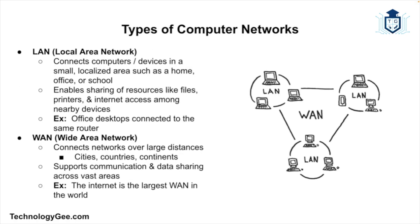Now let's talk about the various types of computer networks. The first one is called a LAN, or Local Area Network. This is a network that connects devices in small local areas like a home, office, or school. It allows devices to share files, printers, and access the internet locally. Then you have a Wide Area Network, or WAN, which is a network that spans a large geographical area.